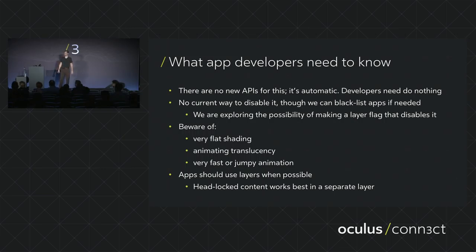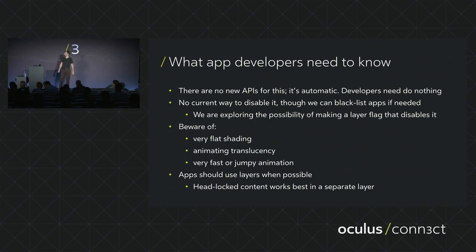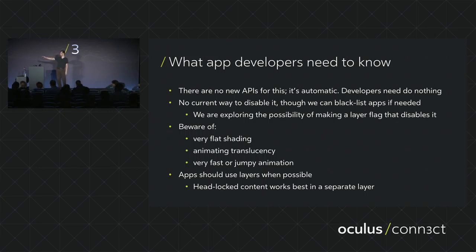A few things to be aware of with ASW: there's currently no way to disable it, though we're looking at a layer flag option. Very flat shaded polygons with no lighting can cause detection difficulties. Animating translucency is potentially a problem if the system can't tell overlapping translucent objects apart. Very fast or jumpy animation in random directions will also be harder to predict. Most applications work surprisingly well with this. A key recommendation — particularly for headlocked content — is to use layers when possible, as layers time warp perfectly.